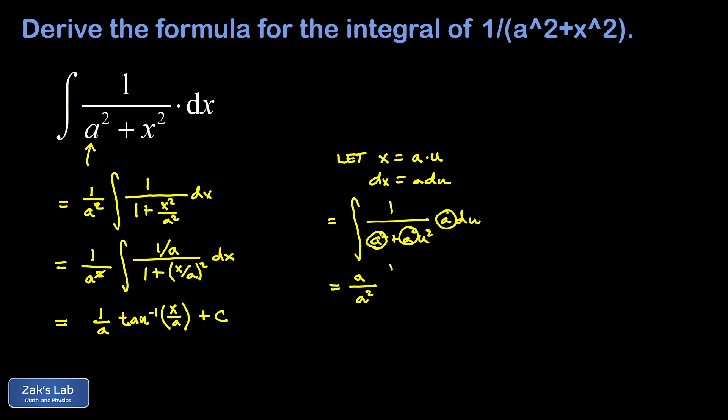We're going to pull out this a into the numerator outside of the integral, and factor out the a squareds from the denominator, pulling that out in front of the integral. This leaves us with the integral of 1 over 1 plus u squared du, which you have to have memorized as the derivative of the inverse tangent function.